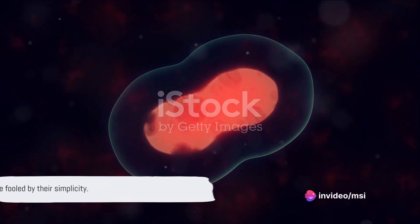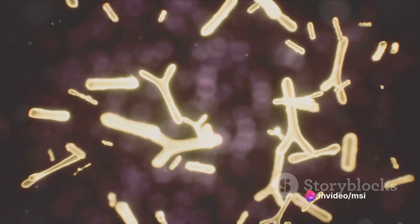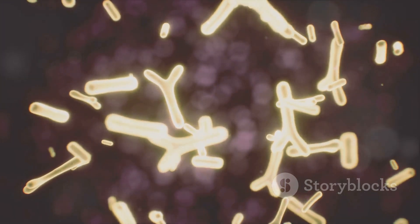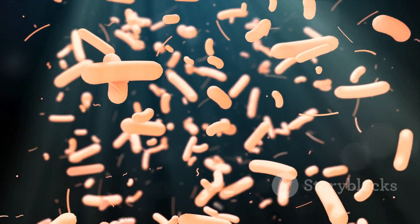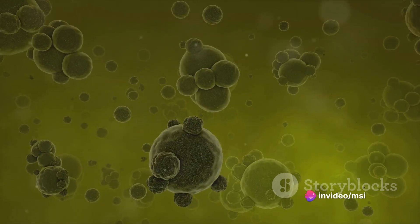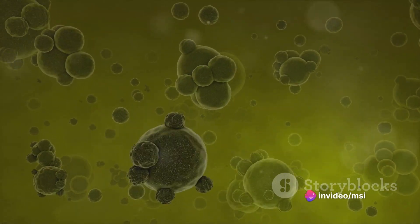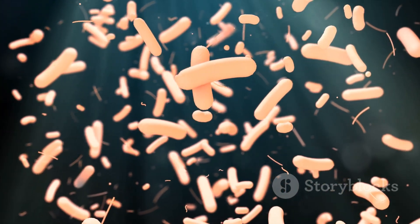But don't be fooled by their simplicity. Prokaryotes still come equipped with essential organelles, like ribosomes, the protein-building factories, a cell membrane for regulation, and in some cases flagella for movement and capsules for protection. These humble abodes are home to bacteria and archaea, resilient single-celled organisms that thrive in diverse environments.